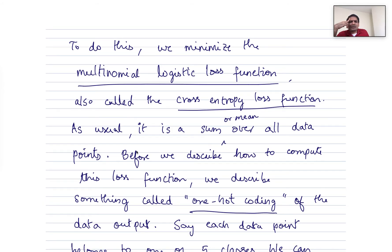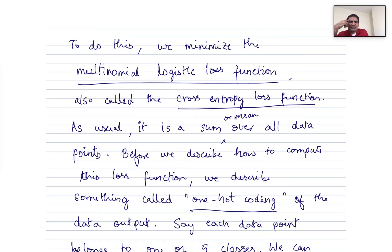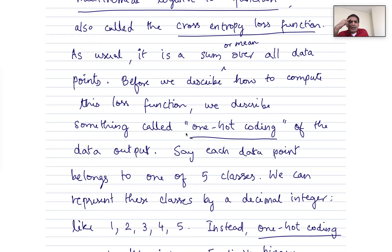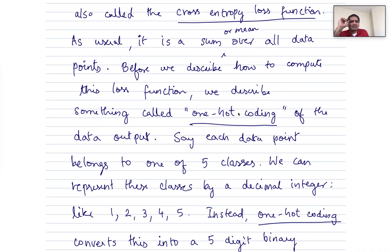Before I describe that, we're going to define, just like, first of all, this loss function is defined for each data point, and then we sum over all the data points, or take the mean over all data points. Same difference, at least for the purposes of optimization. We will use the mean just for convenience. Although traditionally is defined as a sum, the mean is more convenient and performs better. Before we describe how to compute this loss function, we describe something called one-hot coding, sometimes also called dummy coding, D-U-M-M-Y coding, of the data output. So what do we mean by that?